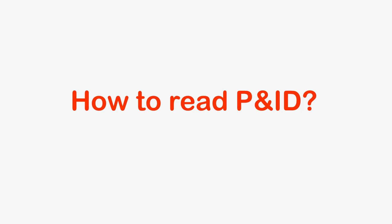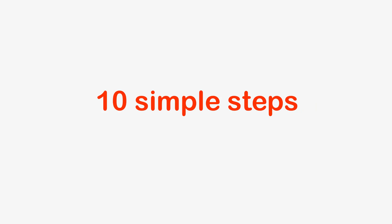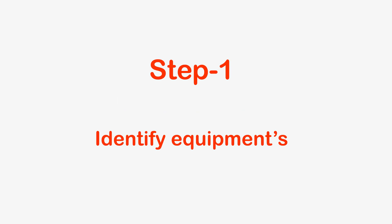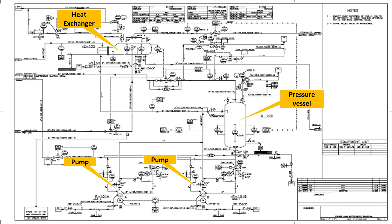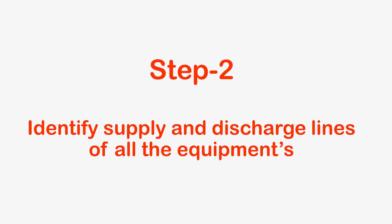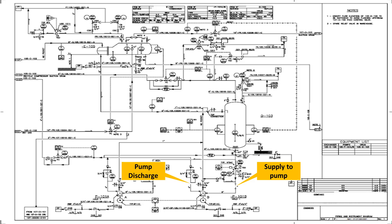Now we will see how to read the P&ID in 10 simple steps. Step 1: Identify Equipment. When you start reading a P&ID, the first thing to be done is to identify all the equipment. Step 2: Identify supply and discharge lines of all equipment. A P&ID may have more than one equipment, but it is better to identify the supply and discharge of one equipment first, then move on to another. Generally, equipment has a minimum of one supply and one discharge.